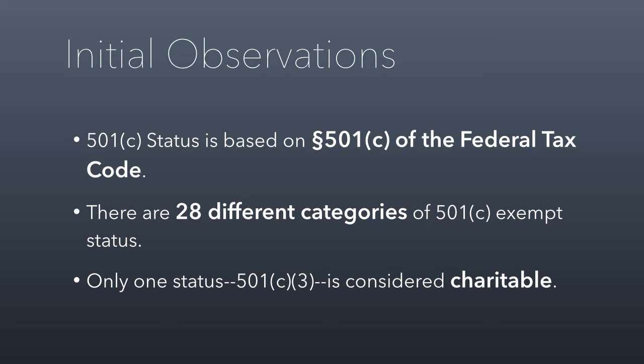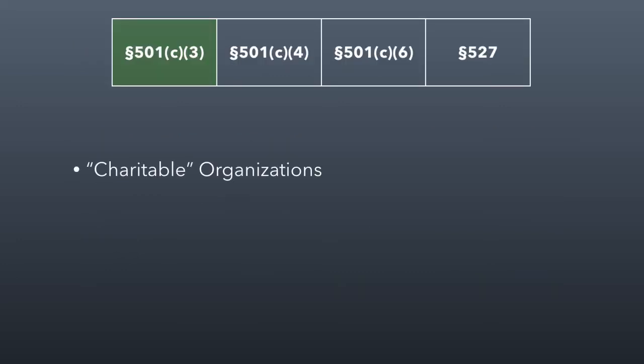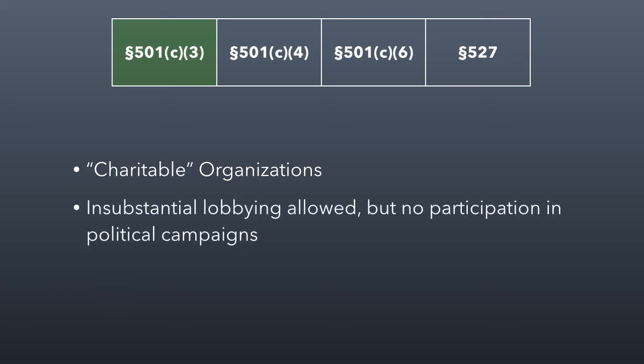There's only one status — 501c3 — that's actually considered charitable. That term charity matters because it determines some important things about the way your organization is treated. Some of the interesting attributes of c3s are, for example, if you're a charity, you're not allowed to engage in any political campaigns, and you're only allowed to participate in insubstantial lobbying. So you can lobby on legislation and social issues, but not very much — it can't be a substantial part of your activity. And you cannot participate in any political campaigns or endorse political candidates. But the most substantial benefit of being a charity is that when people make donations to you, their donations are tax-deductible, and this is the only kind of entity where that's true.